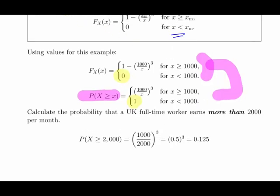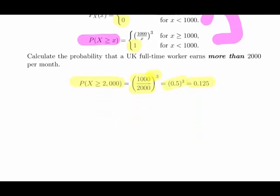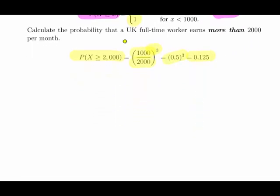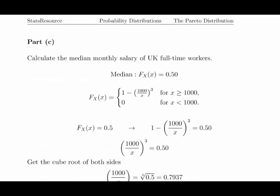For the second part, we calculate the probability that a UK full-time worker earns more than 2,000 per month. Using the survivor function: P(X > 2,000) = 1,000 divided by 2,000 to the power of 3 = 0.5 to the power of 3 = 0.125. So the answer to part two is 0.125.